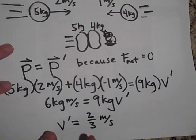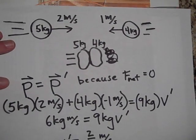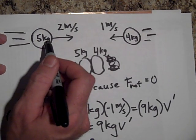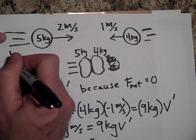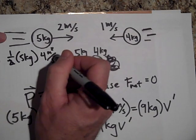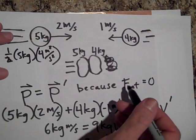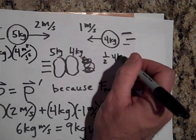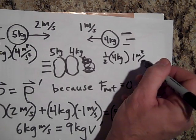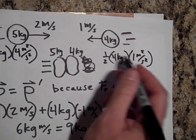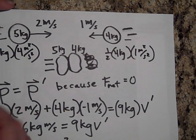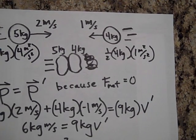Now let's check kinetic energy. Before the collision: KE of the 5 kg mass = ½ × 5 × (2)² = 10 J, and KE of the 4 kg mass = ½ × 4 × (1)² = 2 J. Note that kinetic energies are always positive. When you add them and compare to the final kinetic energy, you'll find the total is not conserved — confirming this is a completely inelastic collision.